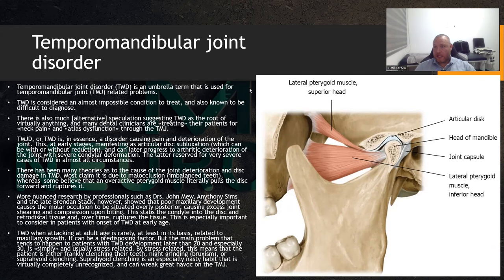TMD is an umbrella term for most of the problems that can originate from the joint itself or related musculatory nerves. Most specifically, we're talking about the joint itself, the muscles of mastication — the temporalis, masseter, pterygoids, suprahyoid muscles — but also the trigeminal nerve.